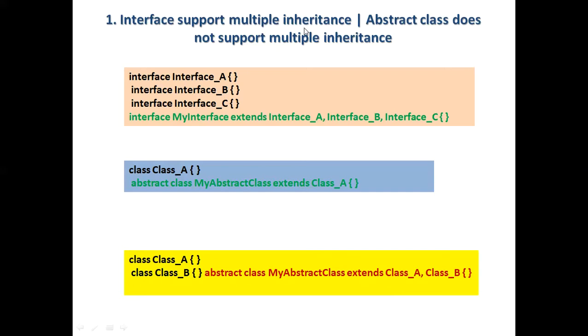We said interface supports multiple inheritance while abstract class does not. So you can get this example here. We have interface A, interface B, interface C. Then we make one more interface MyInterface which extends A, B, and C, all three interfaces. Meaning one interface MyInterface is inheriting or extending multiple interfaces, and that is possible in case of interfaces.